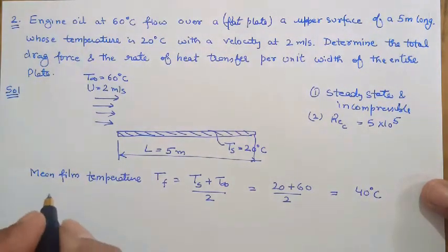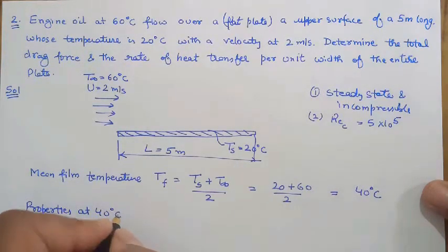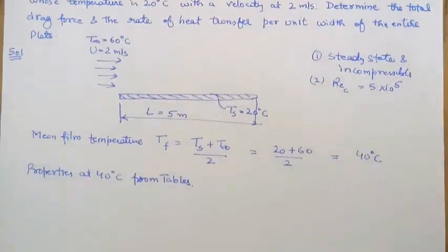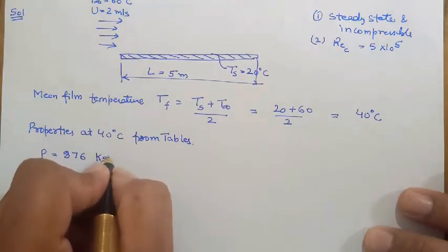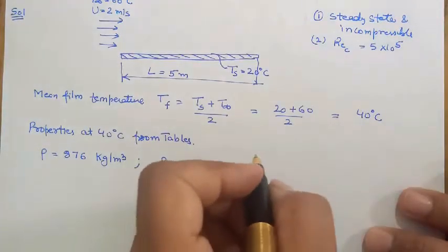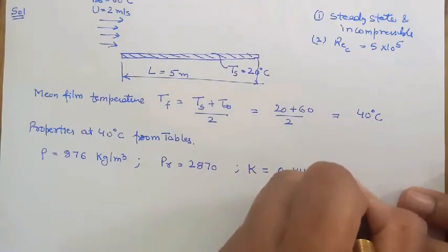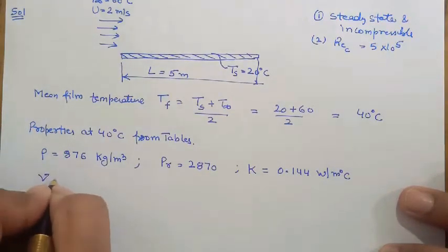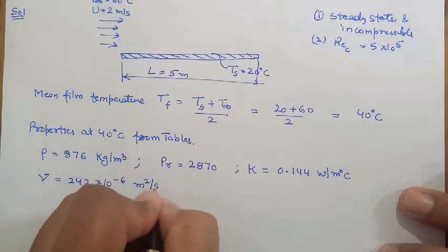From tables, the properties of engine oil at 40 degree centigrade are: density 876 kg per meter cube, Prandtl number 2870, thermal conductivity 0.144 watt per meter degree, and kinematic viscosity 242 times 10 raised to power minus 6 meter square per second.